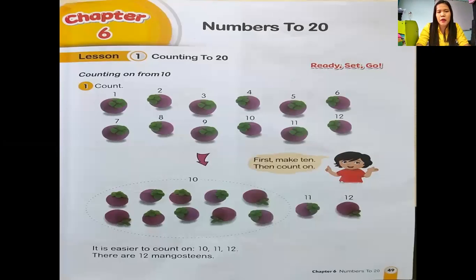Look at lesson one, counting to 20. Counting on from 10. Kita mau berhitung dari 10 dulu. Look at this one first, the mango steens. 1, 2, 3, 4, 5, 6, 7, 8, 9, 10, 11, 12. Lihat dulu anak-anak, ini ada garis panah. Ini menandakan setelah 10 ada angka selanjutnya.